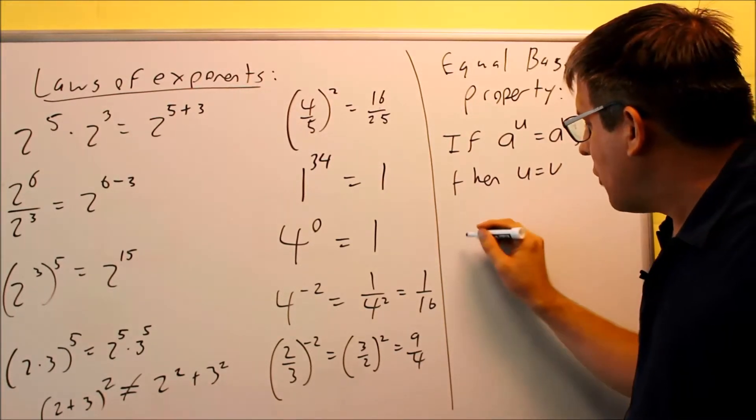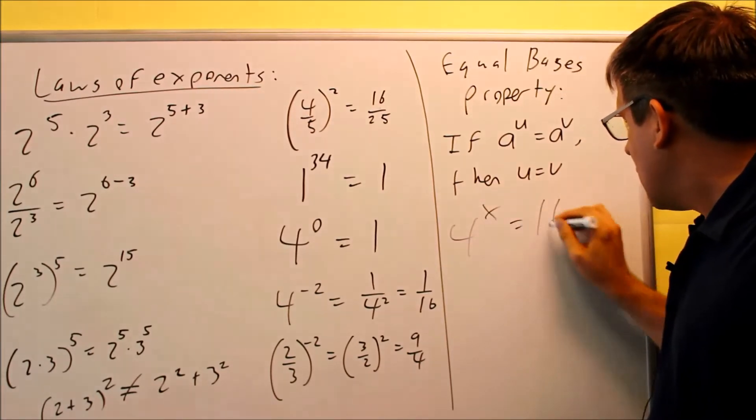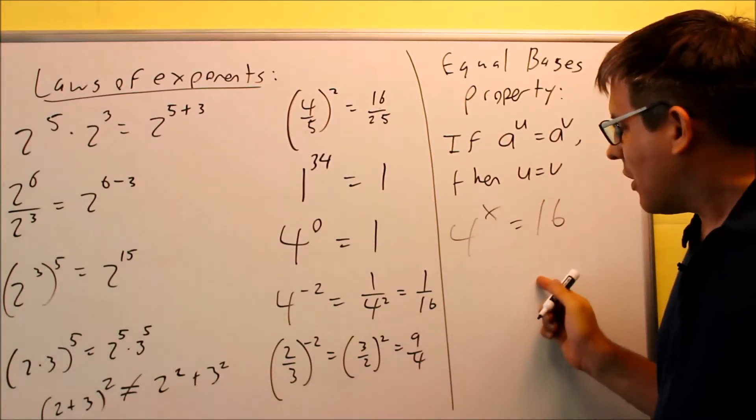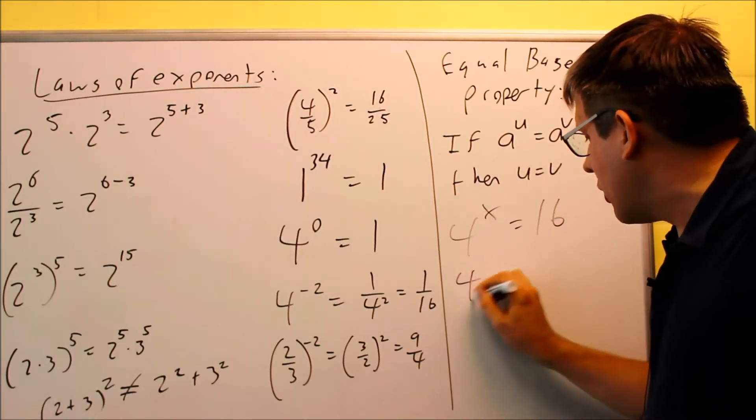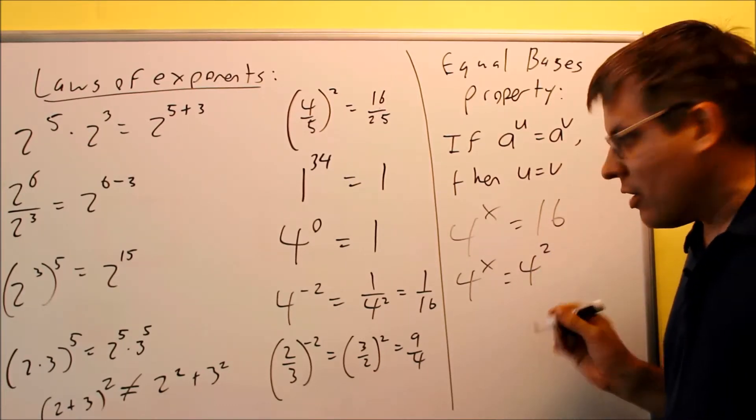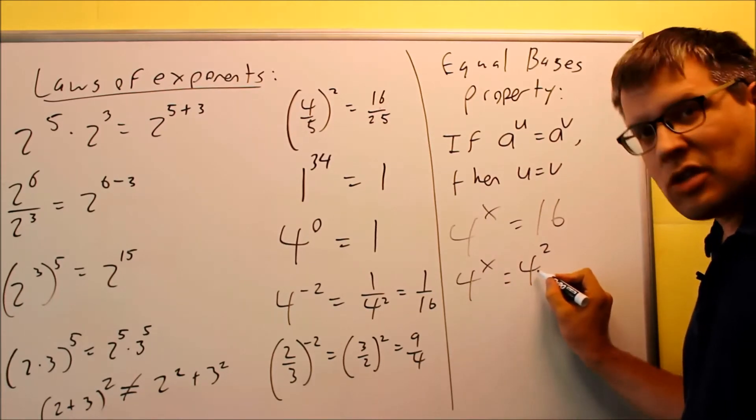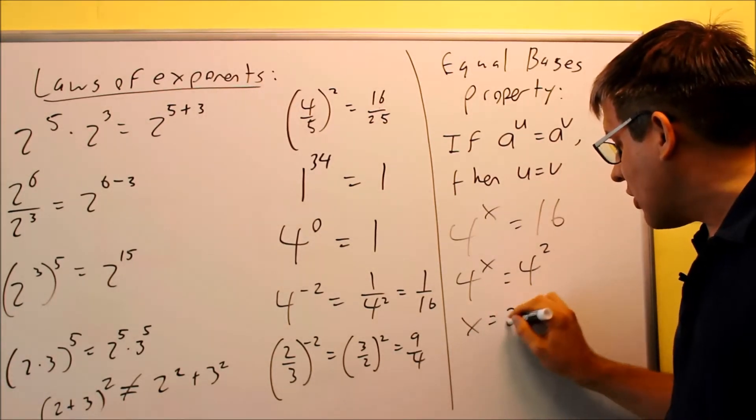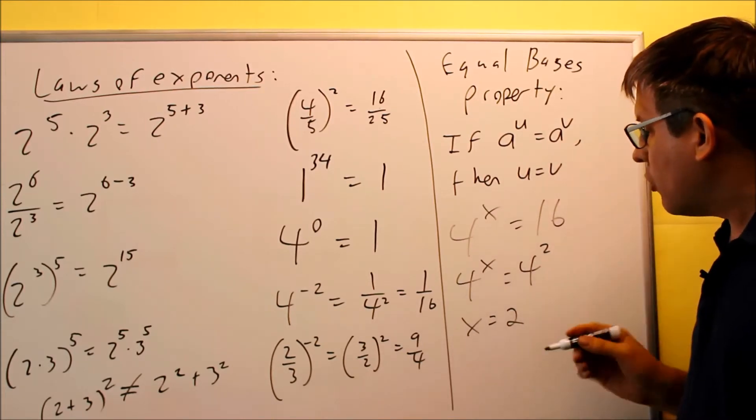For instance, if I have something like 4 to the X equals 16, let's say I have something like this, I want to get both these to be the same base. So therefore, 4 to the X would be here, and then 16 I can write as 4 squared. I'm making both of them the same bases, so therefore, if this one matches that one, that means I can set the exponents equal, and I would get X equals 2 for that. That's how this property would work.